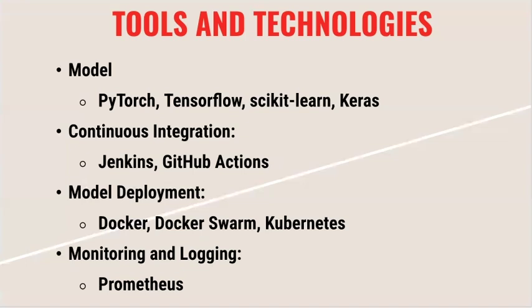For continuous integration, you'd use something like Jenkins or GitHub Actions. For model deployment, there are many approaches: standard Docker, Docker Swarm, or at a much more high level for larger companies, Kubernetes. We won't be covering those too much — Docker might come up here and there. For monitoring and logging, Prometheus is a really common one.